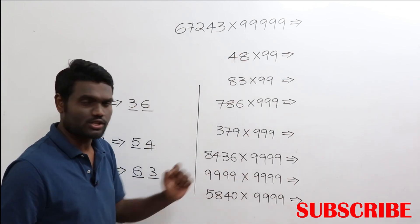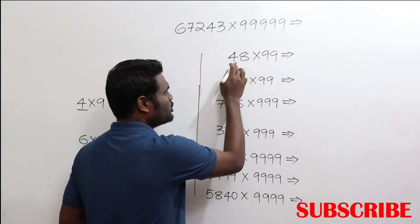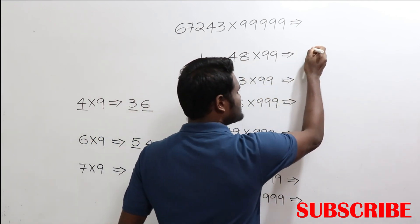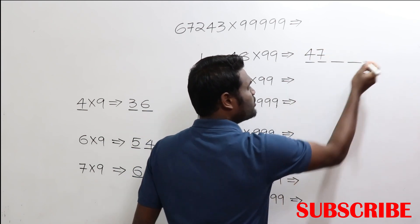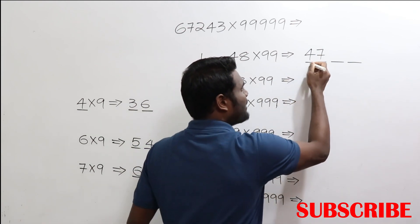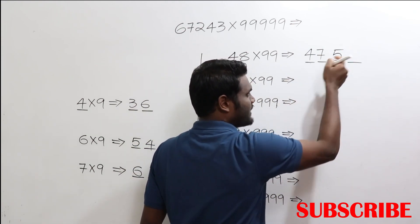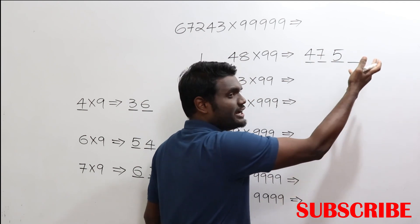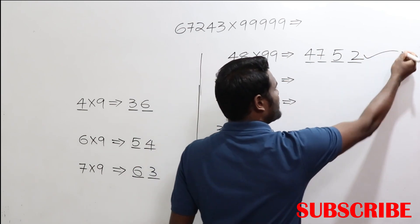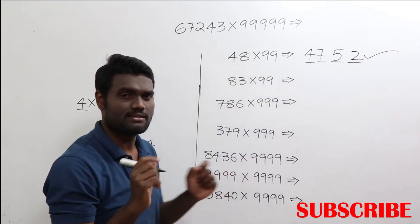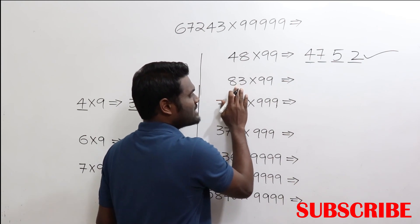Now let's apply this technique to bigger numbers. Take 48 times 99. Do one less: 48 minus 1 is 47. As you have two digits, you'll get two more digits. For 4, how much more to get 9? Add 5. For 7, how much more to get 9? Add 2. So the answer is 4752.